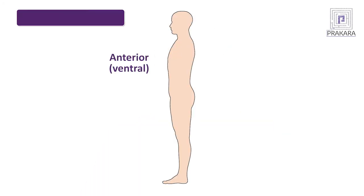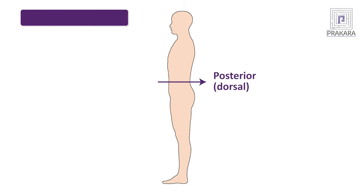The next pair of directional terms are anterior or in the front, and posterior or in the back. Anterior or ventral means in front of. For example, the eyes lie in the anterior part of the skull. Posterior or dorsal means behind. For example, the tongue lies posterior to the lips.